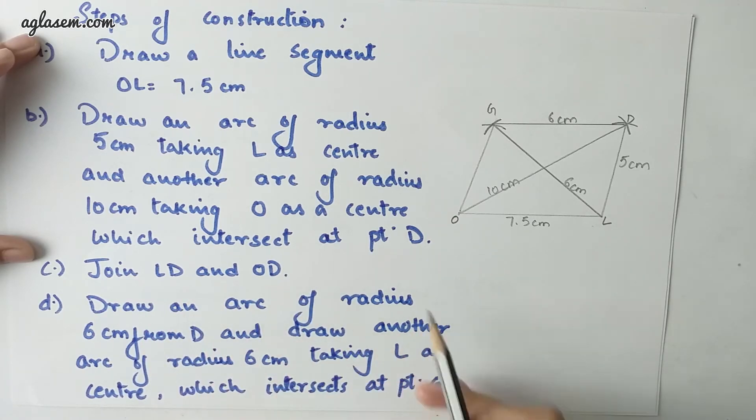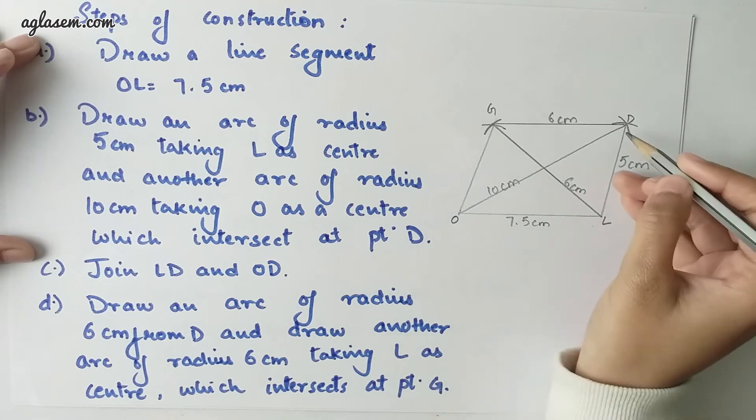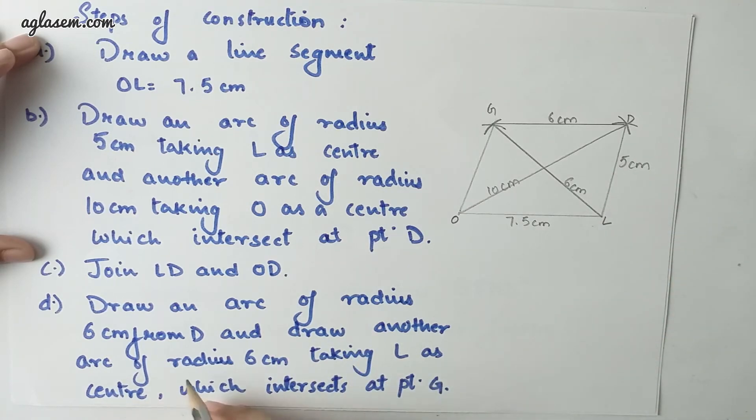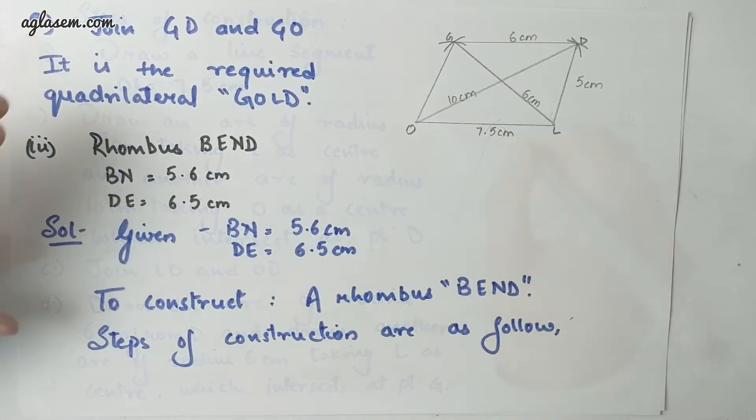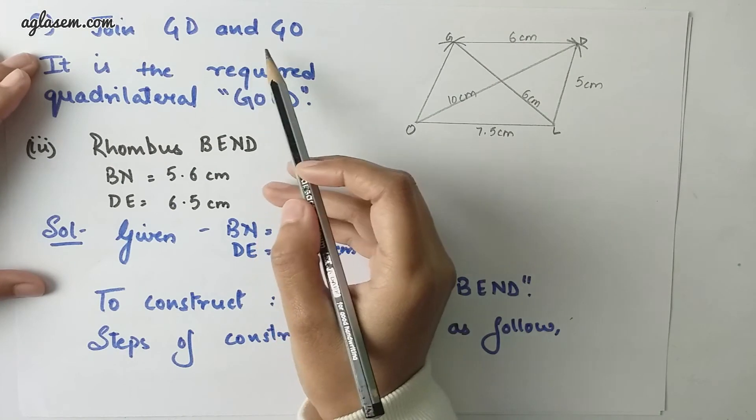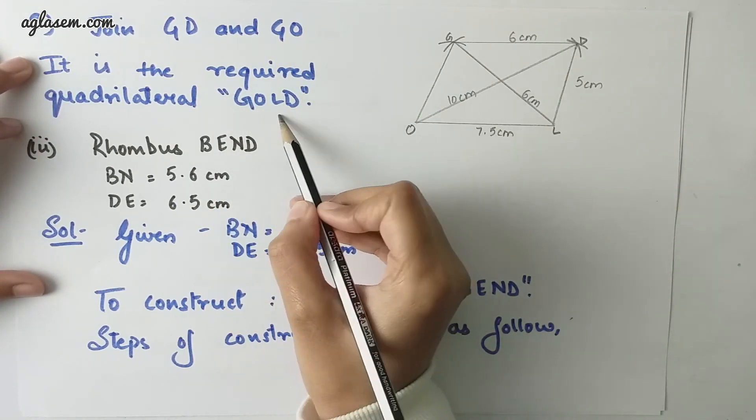Draw an arc of radius 6 cm from D and draw another arc of radius 6 cm taking L as center which intersects at point G. Join GD and GO. It is the required quadrilateral GOLD.